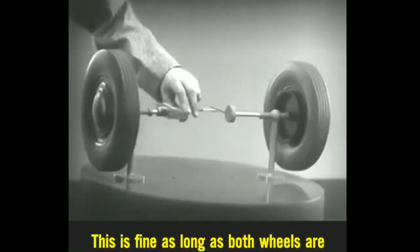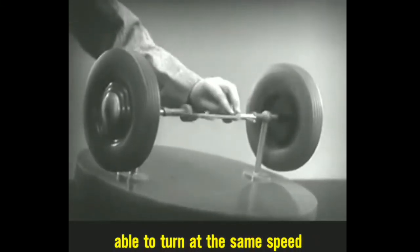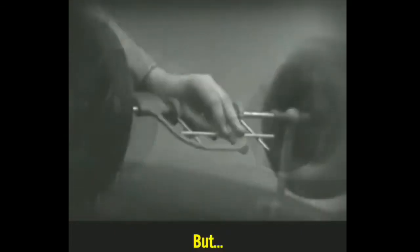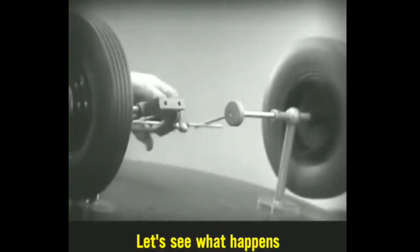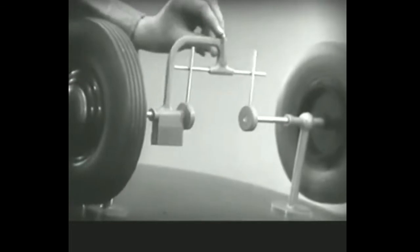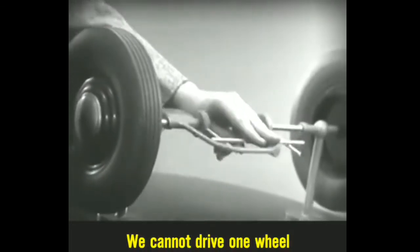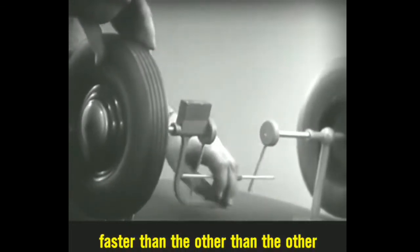This is fine as long as both wheels are able to turn at the same speed. But, let's see what happens when we go around the corner. With this arrangement, we cannot drive one wheel faster than the other.